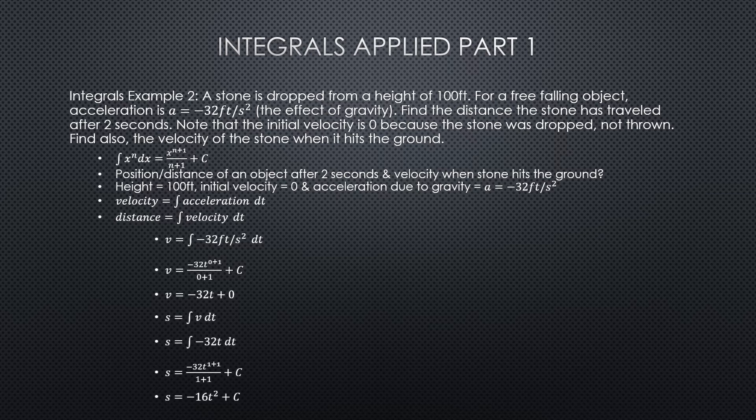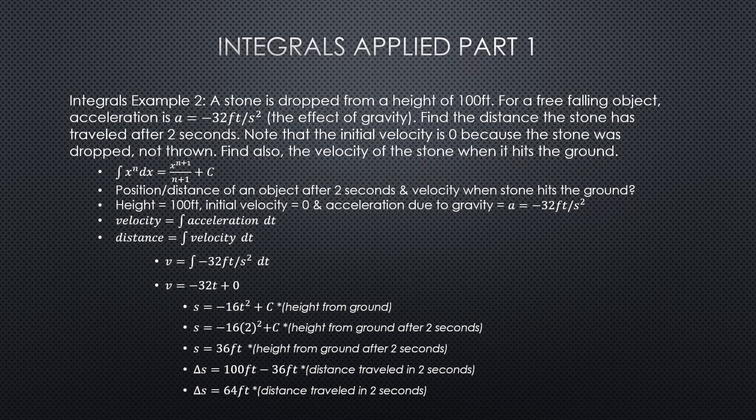We want to find position and distance after 2 seconds and the velocity when the stone hits the ground. We know that velocity equals the integral of acceleration and distance equals the integral of velocity. The velocity is equal to the integral of negative 32 feet per second squared. The initial speed was zero, so C equals zero, giving us v equals negative 32t. Taking the integral gives us a distance formula equal to negative 16t² plus C.